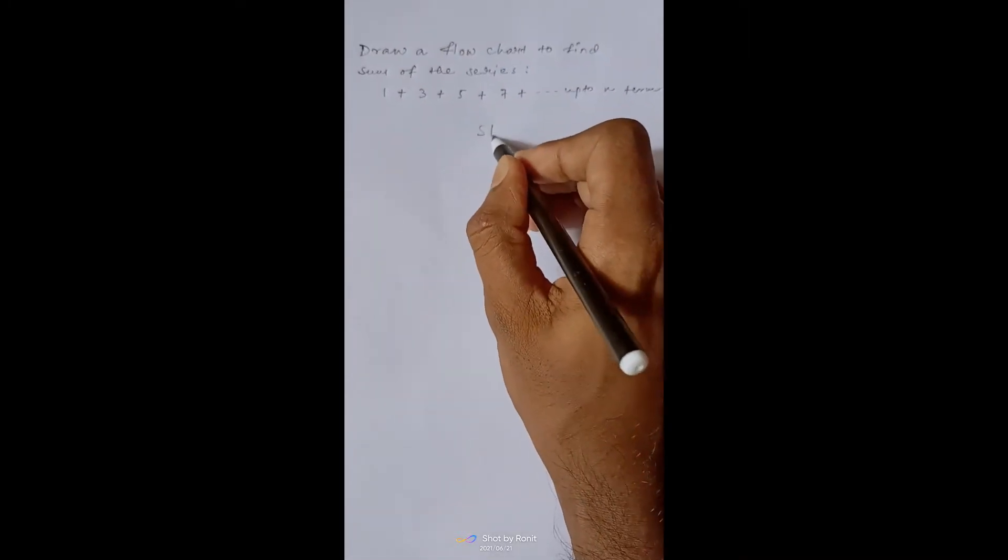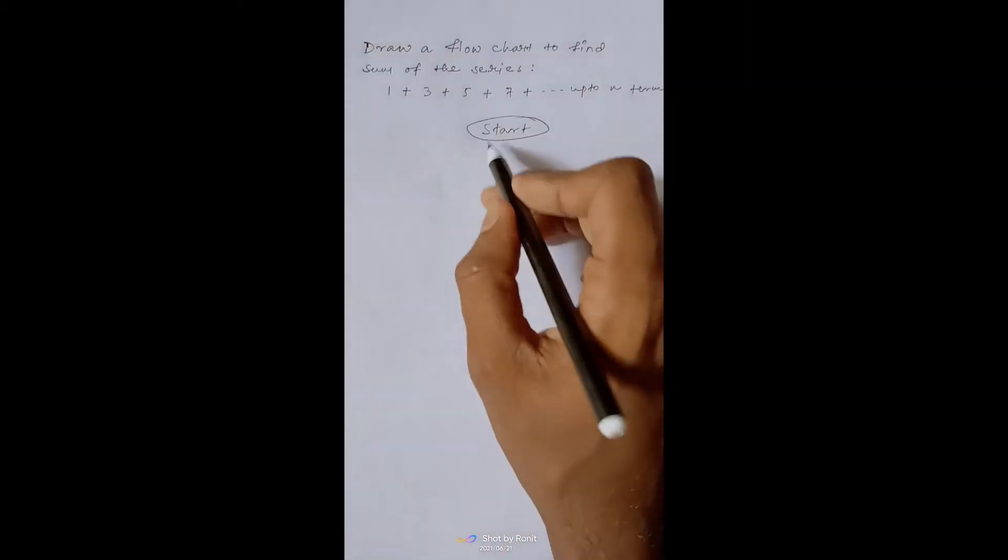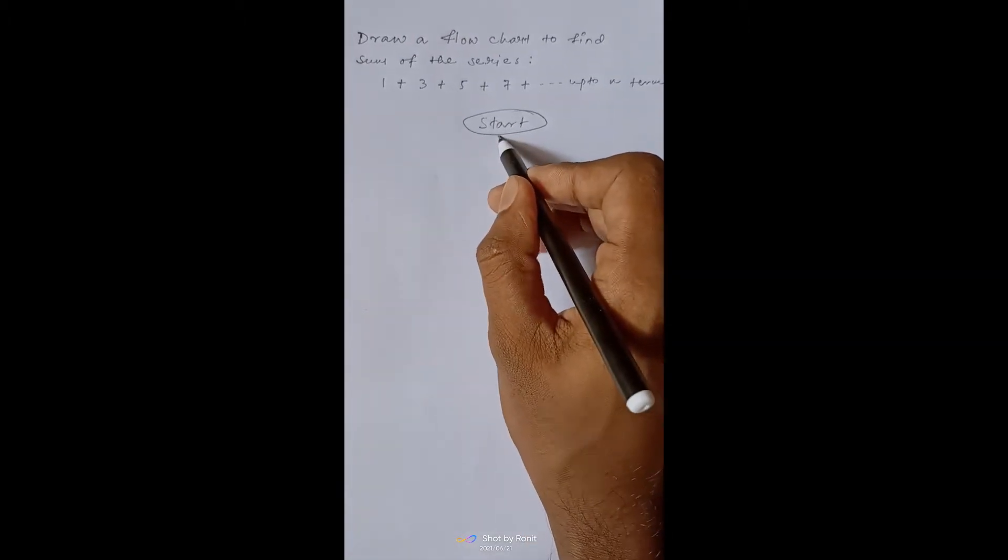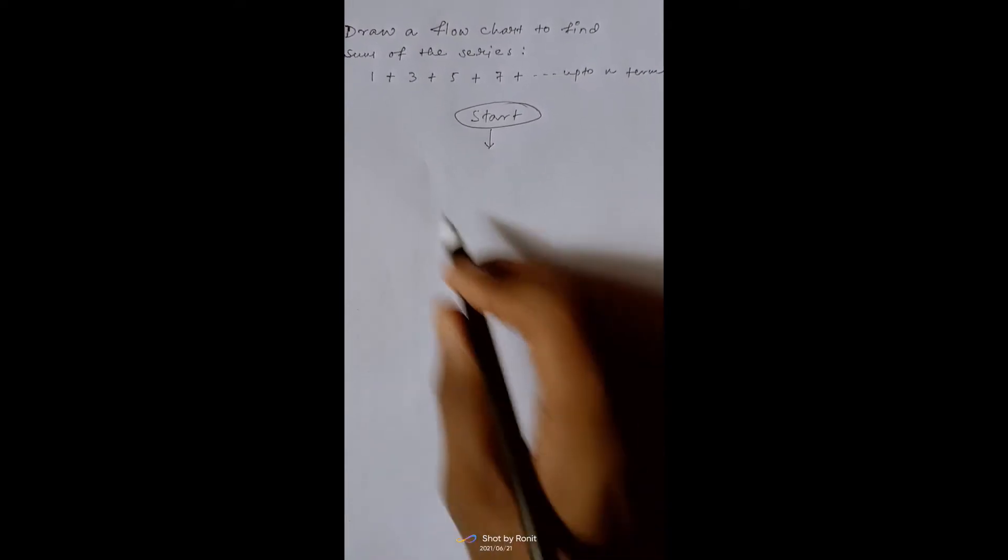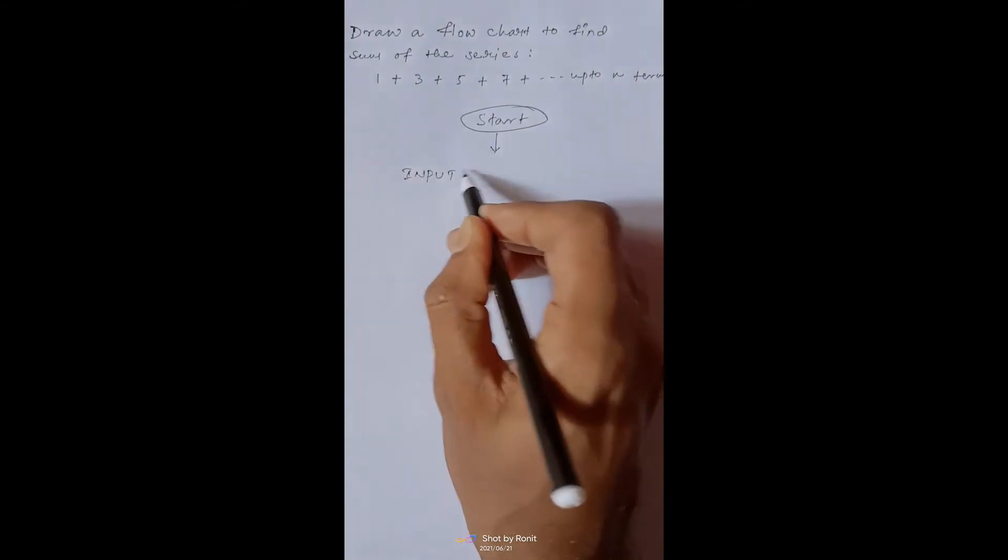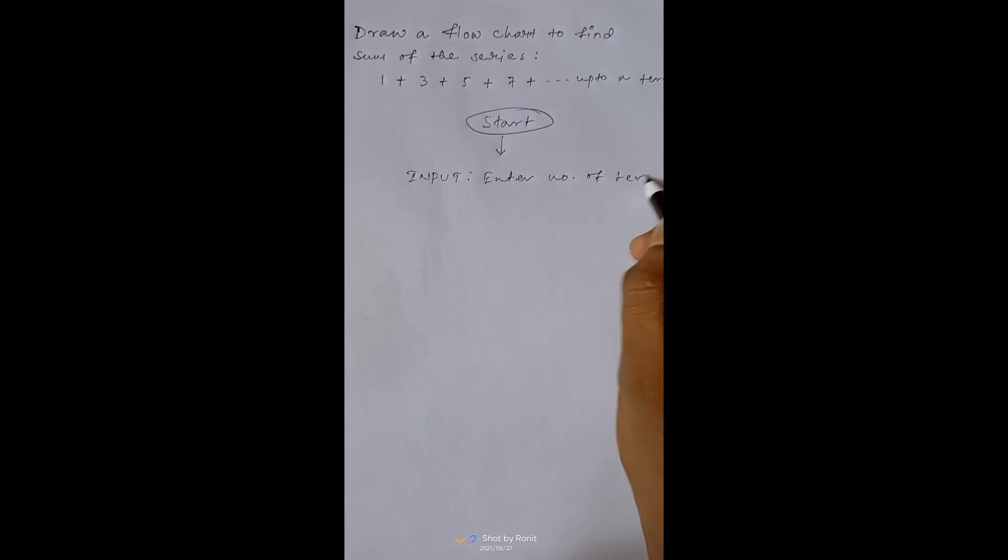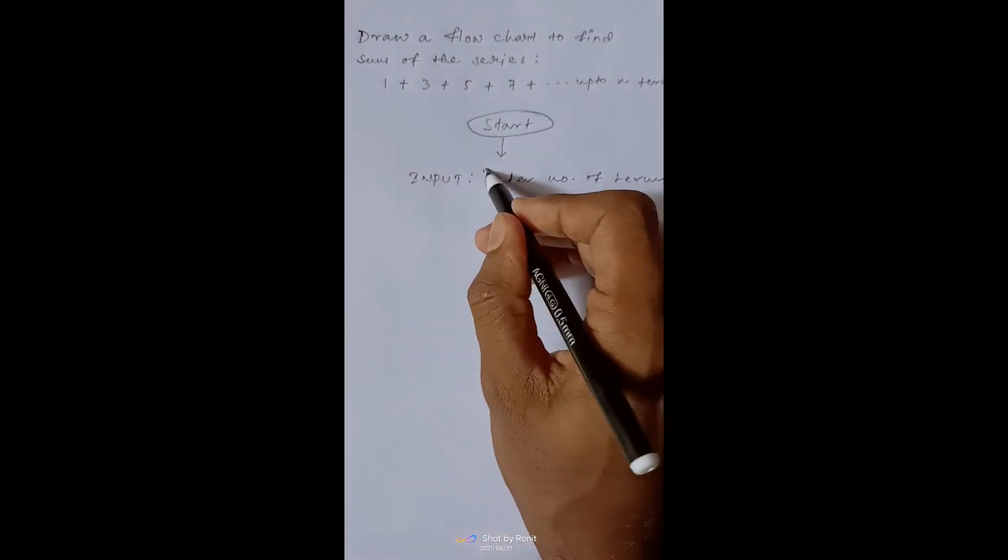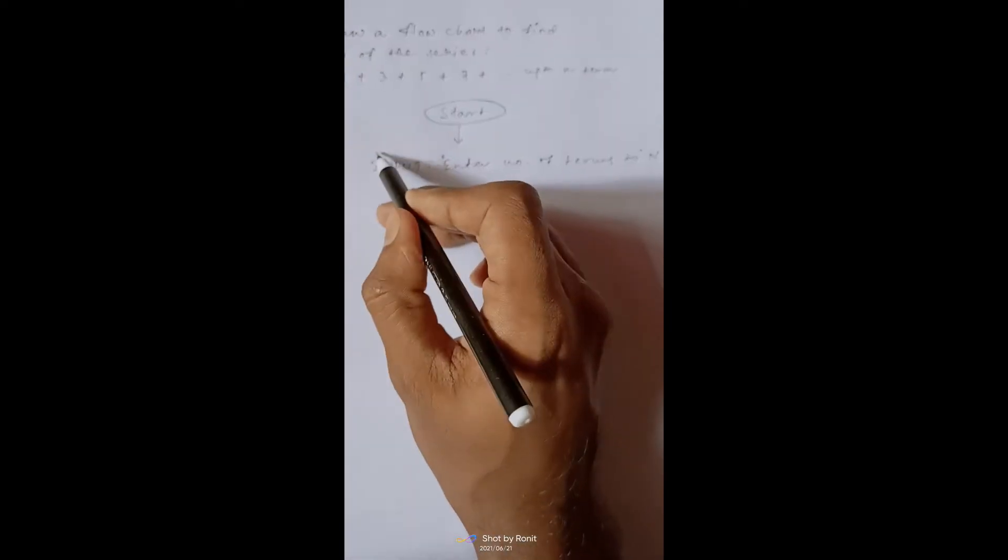So let us draw the flowchart. First we start the method. We have to take input that up to how many times we want to find the sum of the series. So let us take the input. We take the number of terms in the variable n.